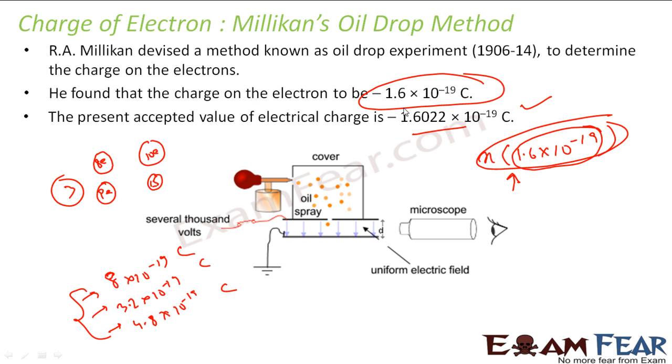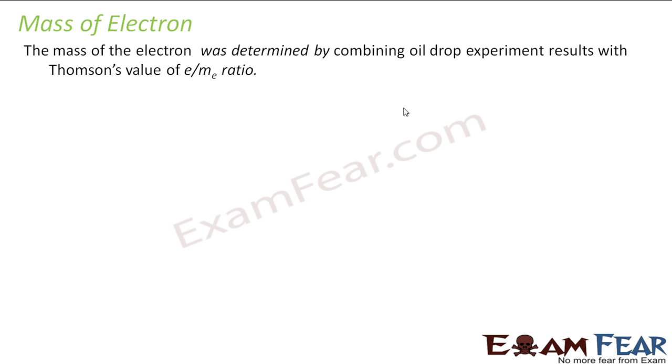So now he has found the charge. So finding mass is very simple, correct? Because he's already found the charge, so the mass can easily be found by combining the results of the E by M ratio.